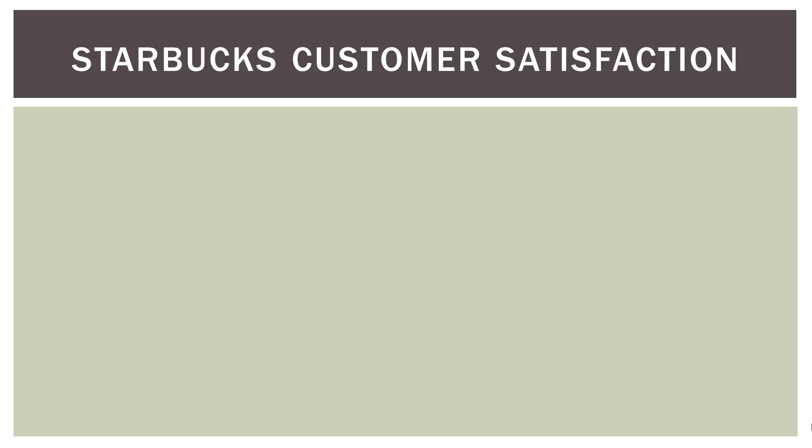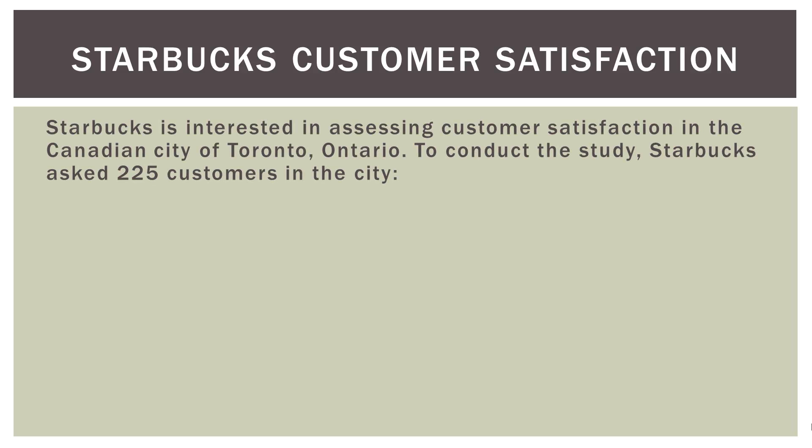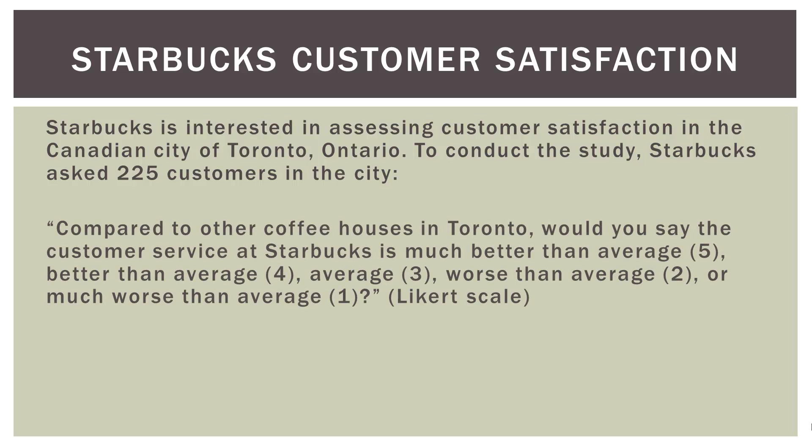Example 2: Starbucks customer satisfaction. Starbucks is interested in assessing customer satisfaction in Toronto, Ontario. To conduct the study, Starbucks asked 225 customers: compared to other coffee houses in Toronto, would you say the customer service at Starbucks is much better than average (score of 5), better than average (4), average (3), worse than average (2), or much worse than average (1)? This is commonly known as a Likert scale — 5, 4, 3, 2, 1 in descending order.